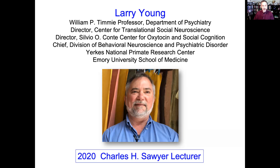Larry has authored over 160 papers and some 90 chapters and reviews. He is the co-author of a popular book, 'The Chemistry Between Us: Love, Sex, and the Science of Attachment.' He has won many honors, including the Frank Beach Award from the Society of Behavioral Neuroendocrinology, and was elected as a member of the American Academy of Arts and Sciences. He is going to update us on his fascinating research into oxytocin and autism.